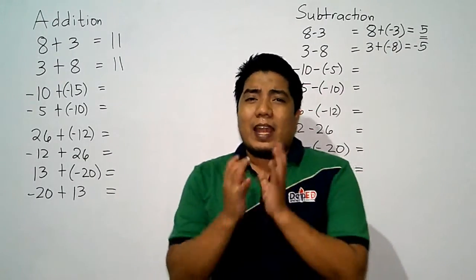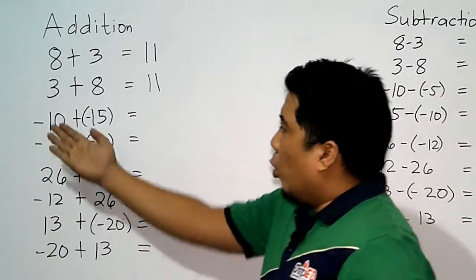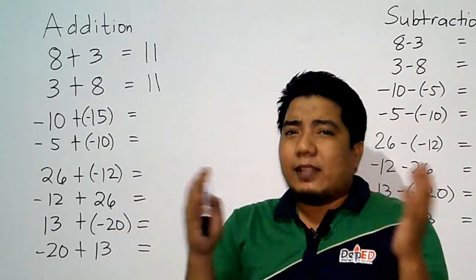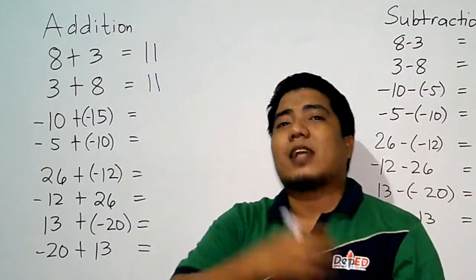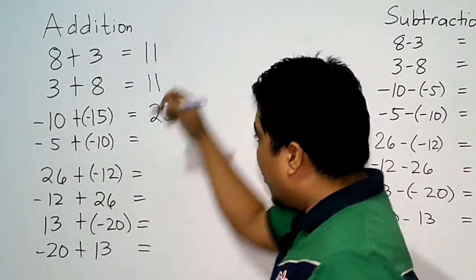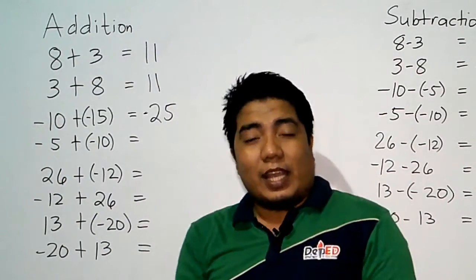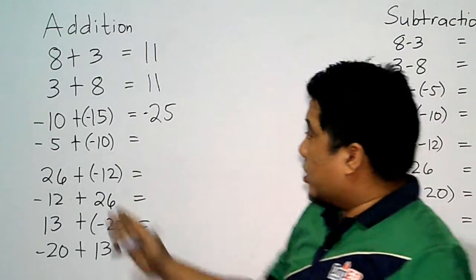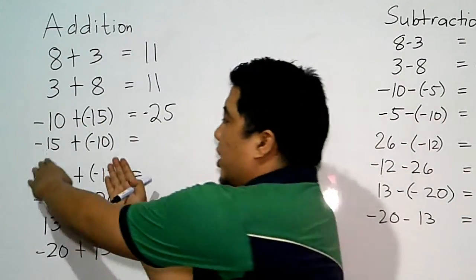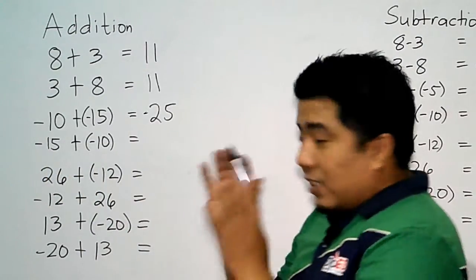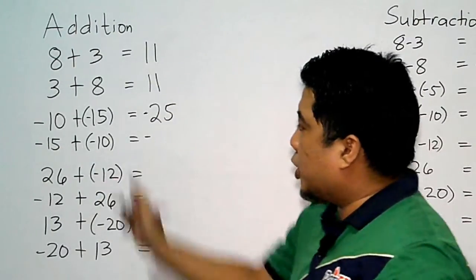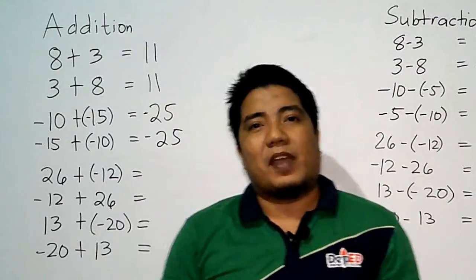Let's consider both negative numbers. In addition, negative 10 plus negative 15: same sign, so we just add them — 10 plus 15 is 25 — and since both are negative, our final answer is negative 25. If they are interchanged, negative 15 plus negative 10, they are still both negative, so we add directly and get negative 25. In addition, interchanging the addends gives the same answer.